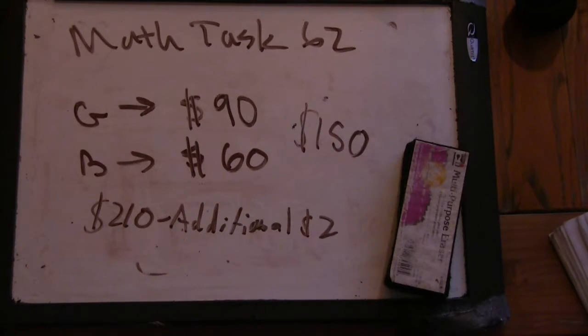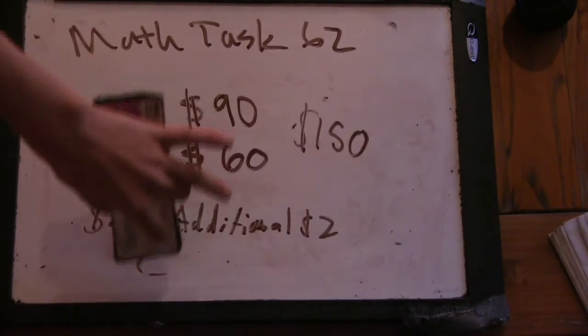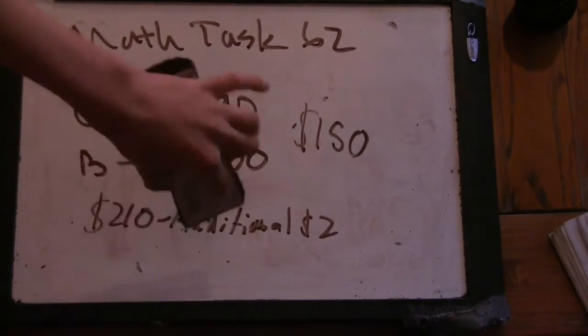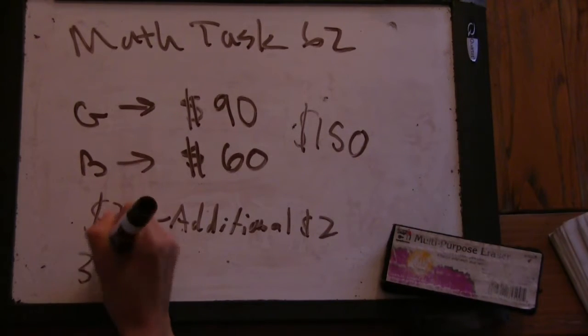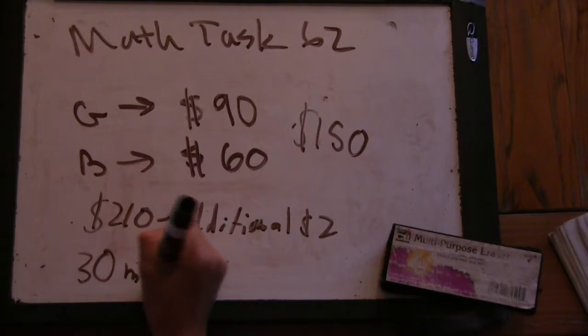Okay, so $60 for gifts. And if each member is paying an additional $2, then $2 times 30 is $60. So there's 30 members.